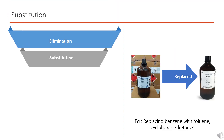The second level is Substitution. This involves replacing a hazardous substance or process with a less hazardous one. Substitution is also an effective way to control hazards as it reduces the risk of harm. Examples of substitution controls include replacing solvent-based paints with a water-based alternative.